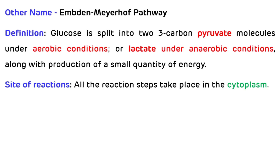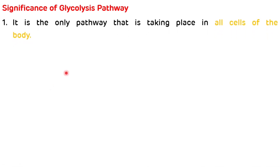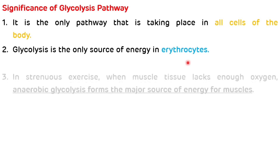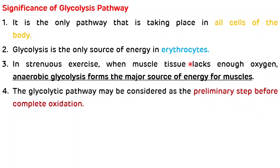Now we will see significance of glycolysis. The first and important significance is that glycolysis is the only pathway that takes place in all the cells of the body. Second, glycolysis is the only source of energy in RBCs, that is erythrocytes. Glycolysis is also the preliminary step for the complete oxidation of glucose.